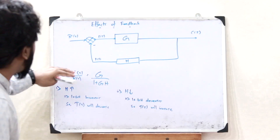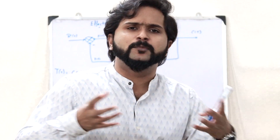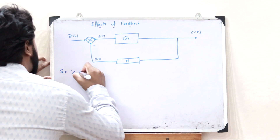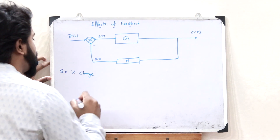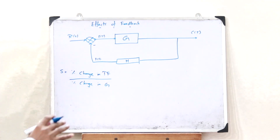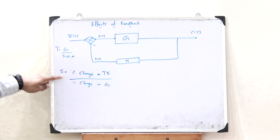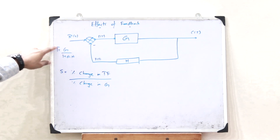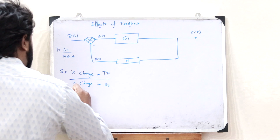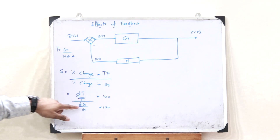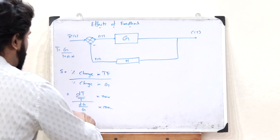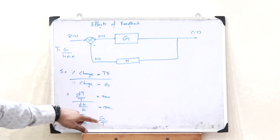Next, let us see how feedback affects the sensitivity of the system. The sensitivity is given by the expression S = percentage change in the transfer function divided by percentage change in the gain. With T = G/(1+GH), the sensitivity becomes S = (dT/T × 100) / (dG/G × 100), which simplifies to (dT/dG) × (G/T).